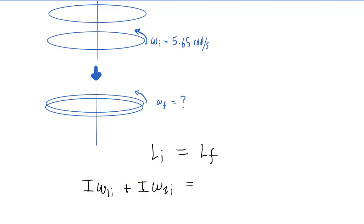The disks have coupled together. When the disks couple together, we can add their moments of inertia, so we say I plus I to represent the new moment of inertia of the two disk system, times the final angular speed of that system — and that's what we're looking for. The disk that was dropped on top of the rotating disk had an initial angular speed of zero.